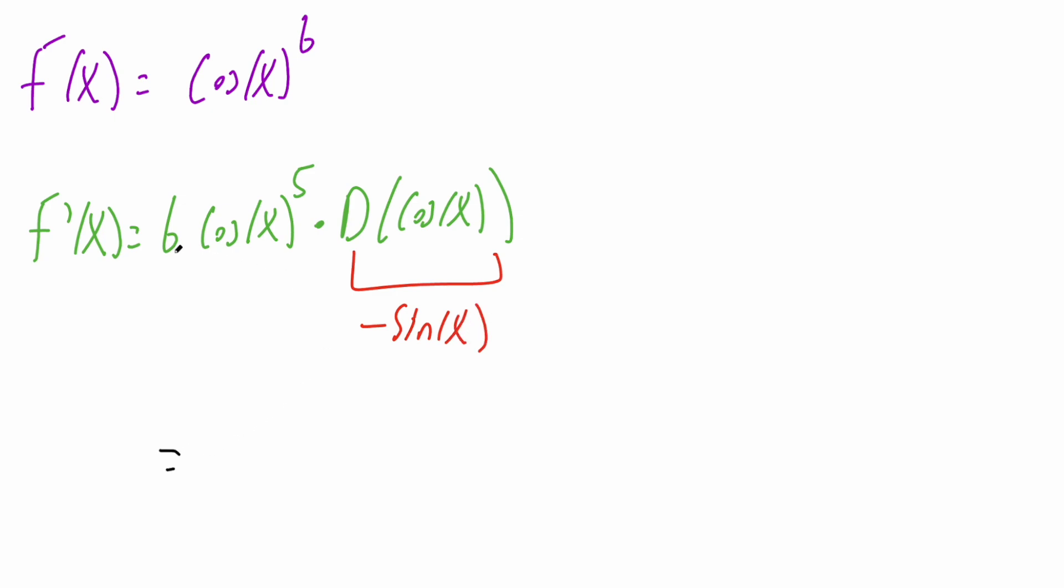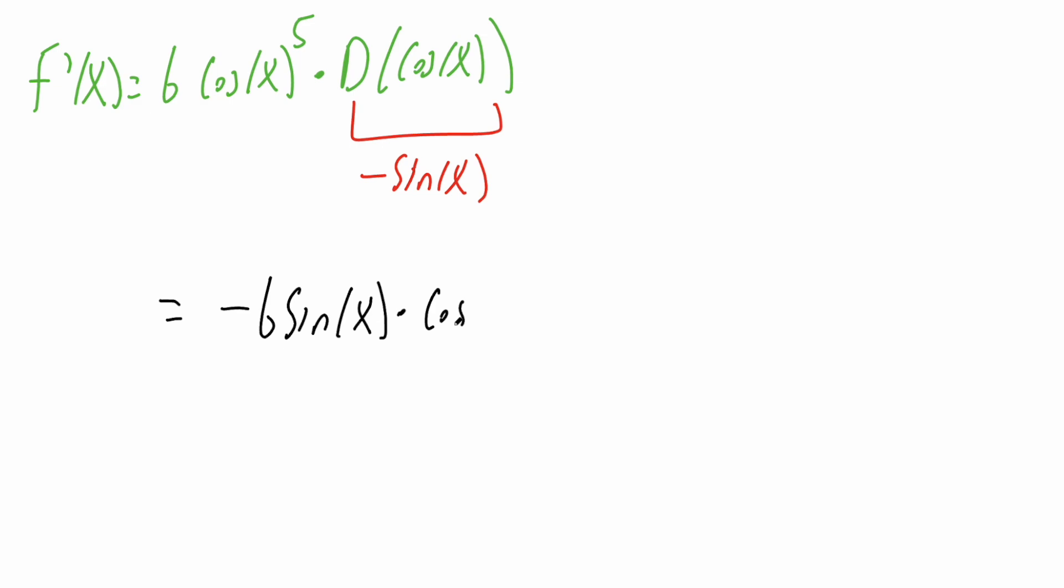And so our final answer is negative six. So we have negative six sine x times cosine raised to five x. This right here is our final answer, and that's all we need to do for this problem.